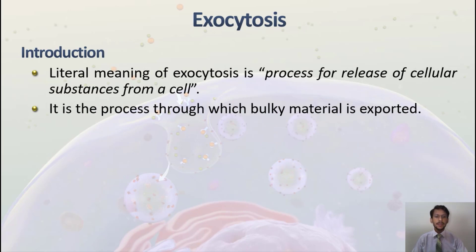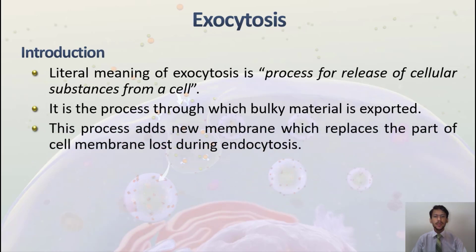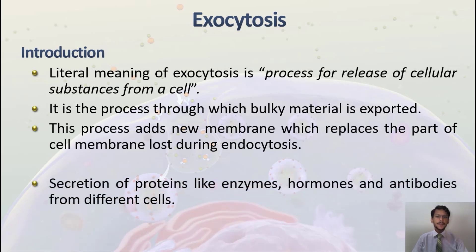When bulky materials in heavy amounts need to be exported from the cell, it is done through exocytosis. This process also adds new membrane which replaces the part of the cell membrane lost during endocytosis. An example is the secretion of proteins like enzymes, hormones, and antibodies from different cells — whenever a cell needs to release enzymes, hormones, or antibodies, it does so through exocytosis.